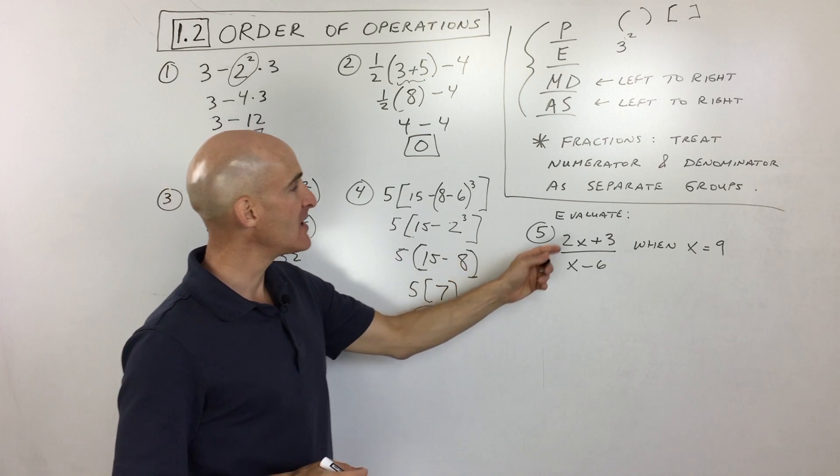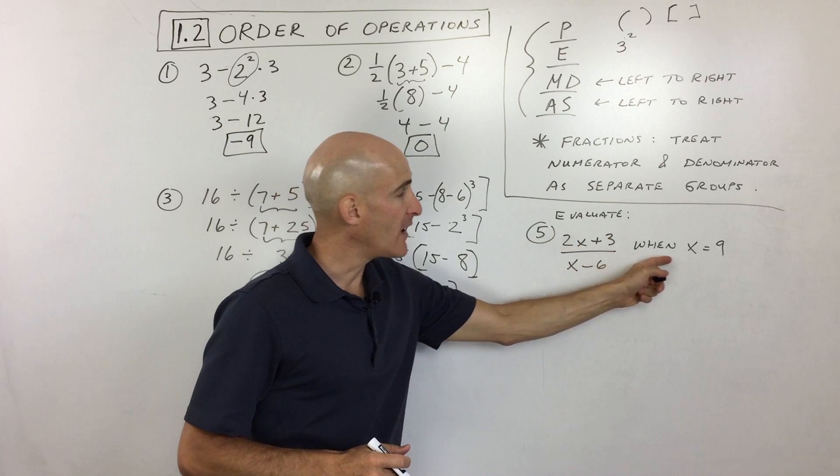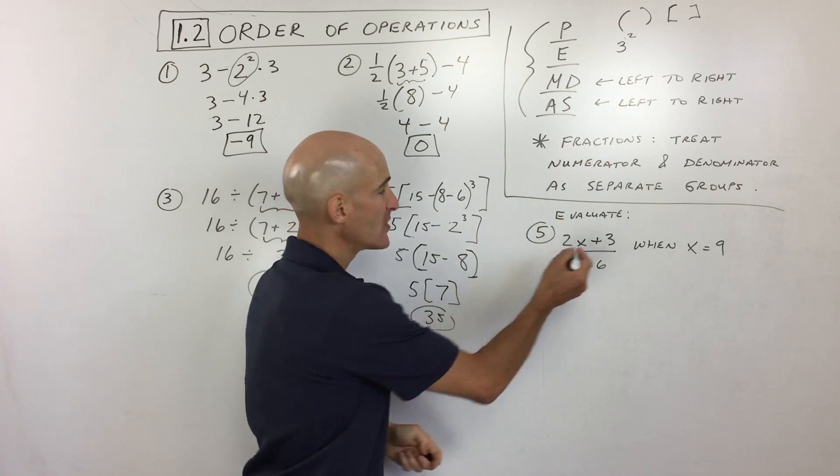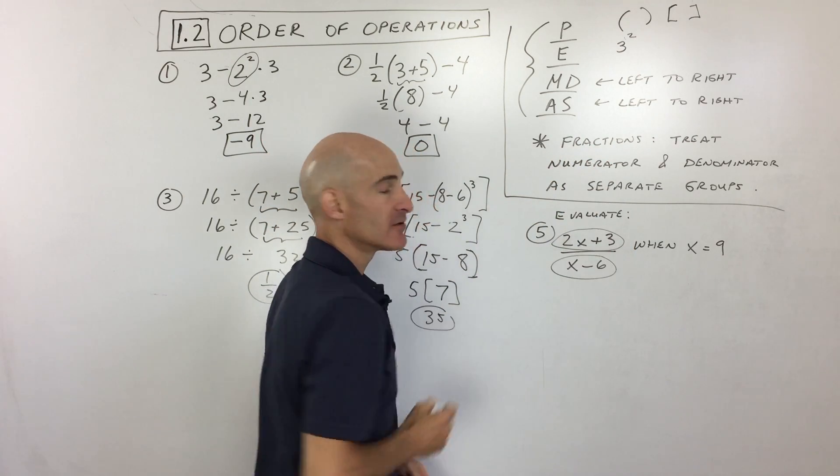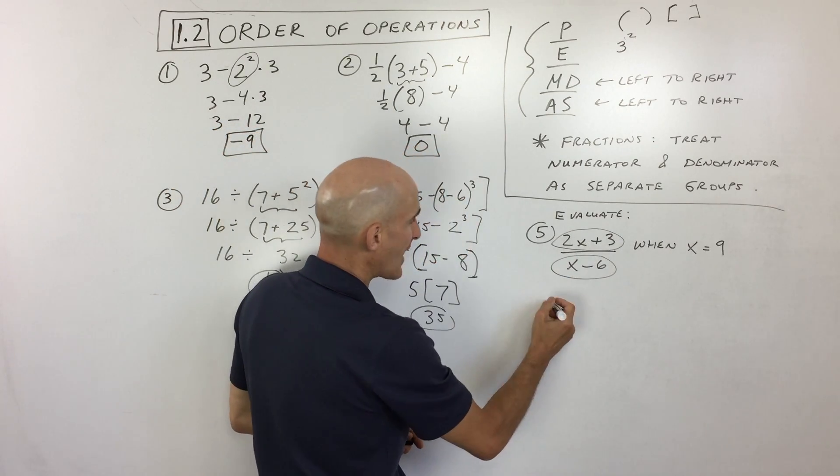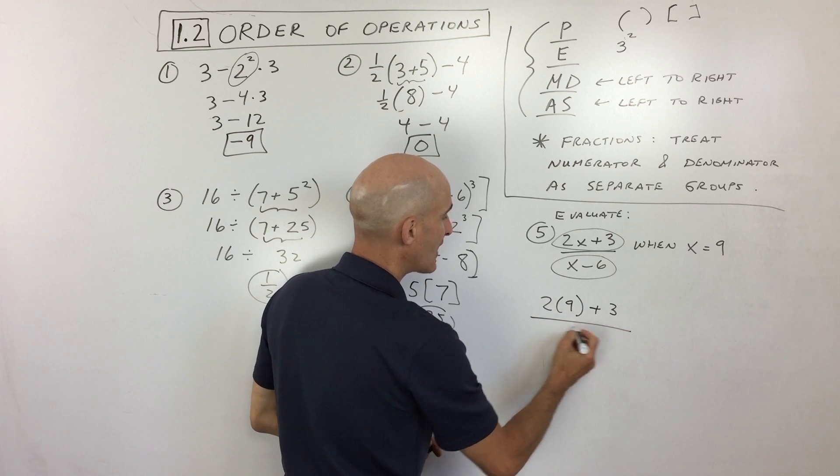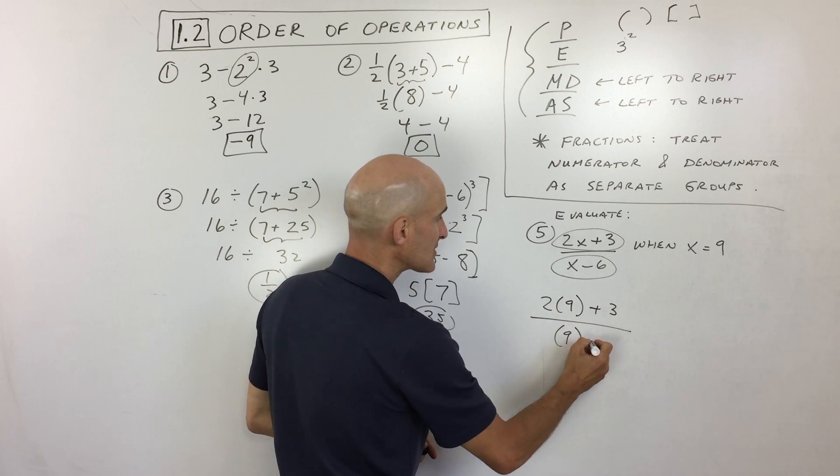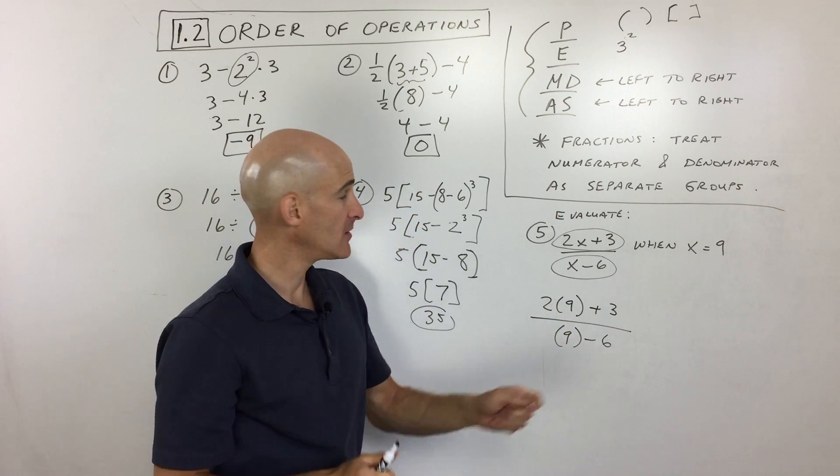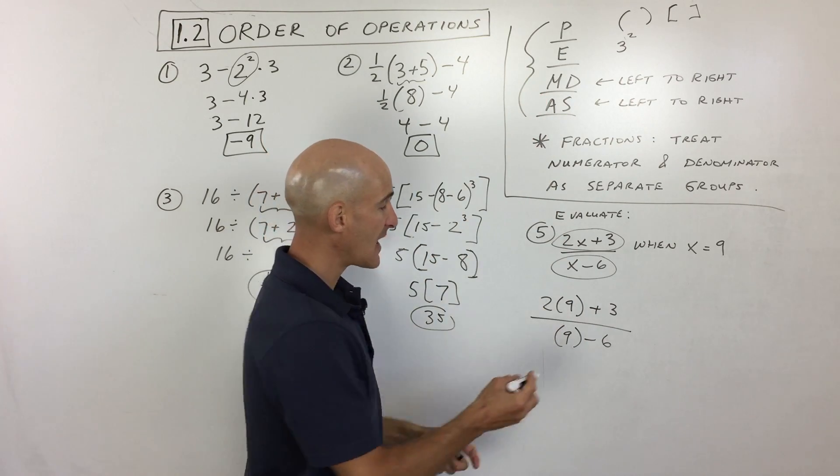Last example, number five. It says evaluate, which means find the value when x=9. Notice we have a fraction. Remember, when you have a fraction, you treat the numerator and denominator separately, as separate groups. When you evaluate, put the 9 in place of x. So we have 2x+3, and in the denominator x-6. In the numerator, 2 and 9 are right next to each other, that means multiplication. Multiplication comes before addition, so 2·9=18.